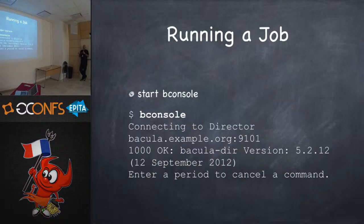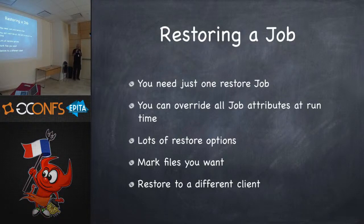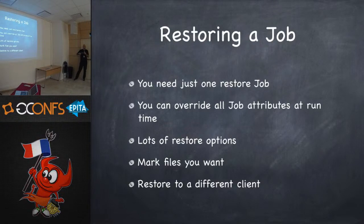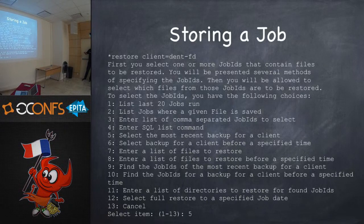Running a job is pretty straightforward. The job gets queued and runs in the background. You need one job per thing you want to back up, but when restoring, you only need one restore job. Don't create a restore job for each client — all configuration items in your restore job can be overridden at runtime. Restores are only done manually anyway. When you go to the restore job, you get a dozen different choices — the most common are entering a list of files or selecting a backup for a client before a specified time.